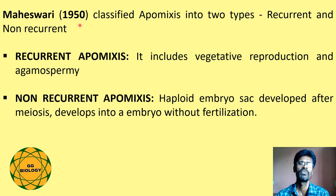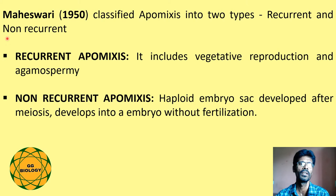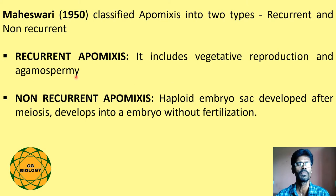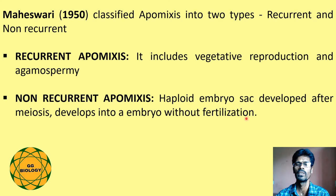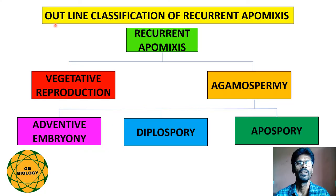Maheswari in the year 1950 classified apomyxis into two types: recurrent and non-recurrent. Recurrent apomyxis includes vegetative reproduction and agamospermy. Non-recurrent apomyxis is where a haploid embryo sac developed after meiosis develops into an embryo without fertilization.